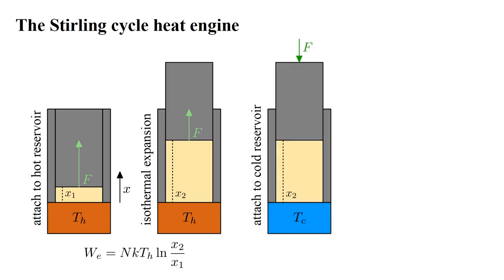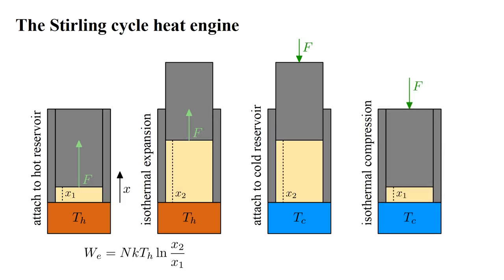We now replace the hot reservoir with a cold reservoir at temperature TC. The gas cools to this temperature and its pressure decreases proportionally. Exerting a force on the piston, we isothermally compress the gas until the piston returns to its original position X1. The work done on the system is NKT cold times natural logarithm of X2 over X1. By the first law, this energy in the form of work must be converted to energy in the form of heat, which is transferred to the cold reservoir.